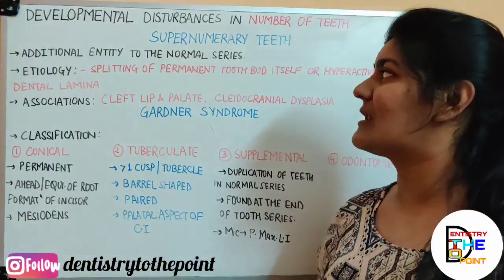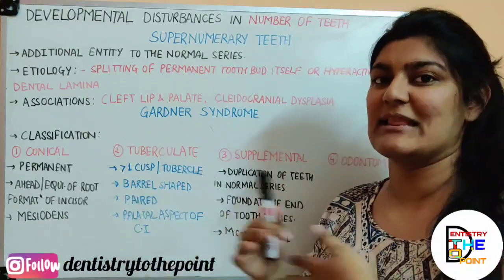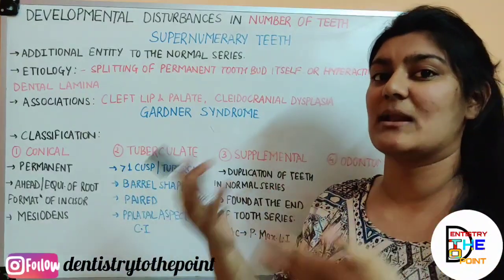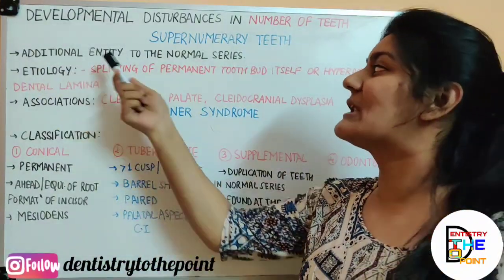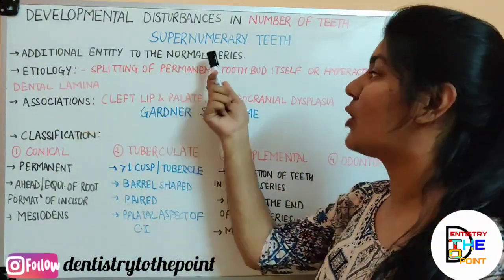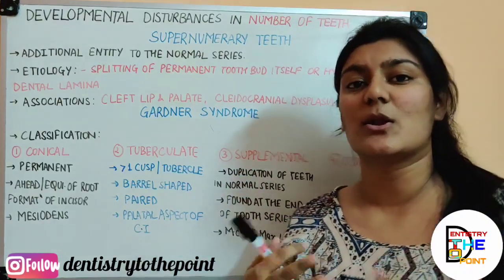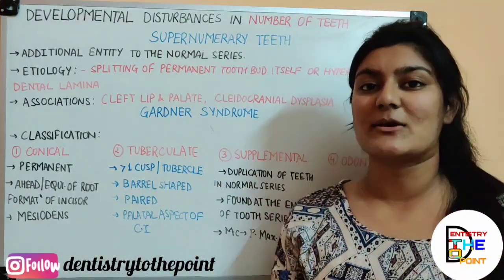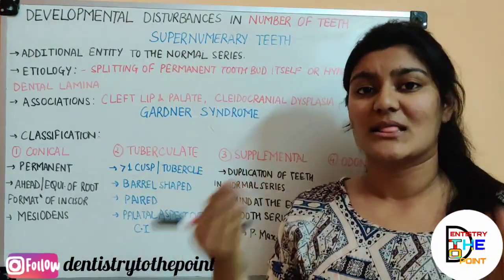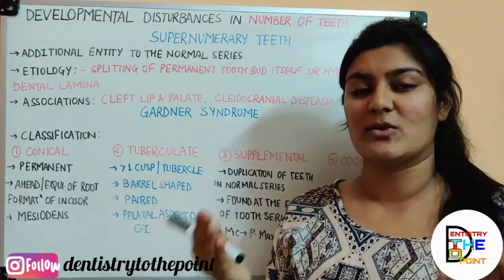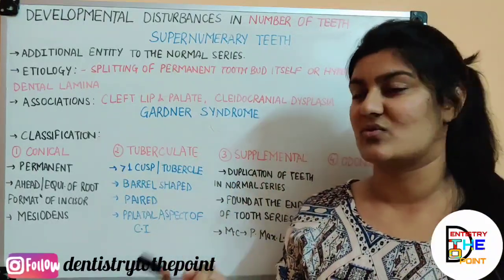As the name itself suggests, supernumerary means an extra number — an additional entity to the normal series or an extra entity to the normal set of teeth. So the normal count plus one extra.